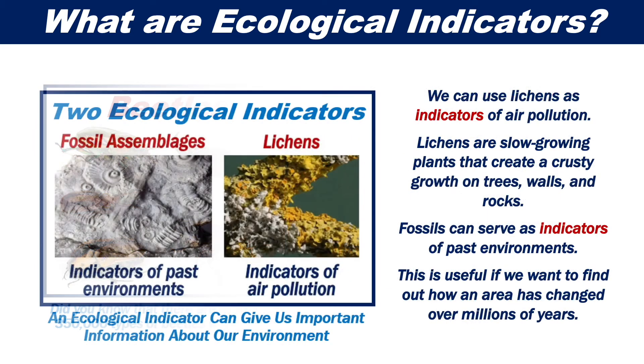We can also use lichens as indicators of air pollution. Lichens are slow-growing plants that create a crusty growth on trees, walls, and rocks.